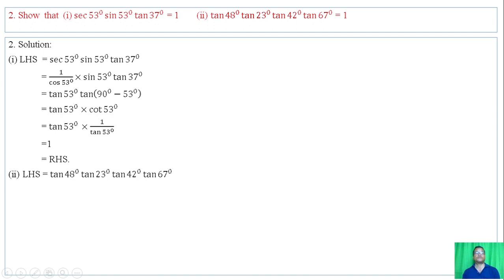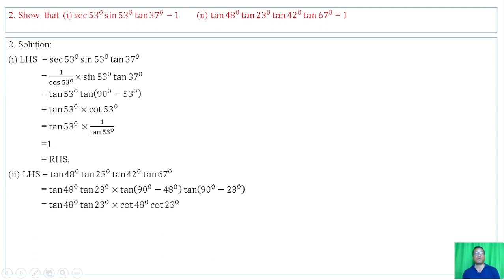Question number 2, Roman numeral 2: tan of 48 degrees times tan of 23 degrees times tan of 42 degrees times tan of 67 degrees. We rearrange: tan of 48 degrees with tan of 42 degrees, and tan of 67 degrees comes from 90 minus 23 degrees. Then tan of 43 degrees times the complementary pair equals 1.